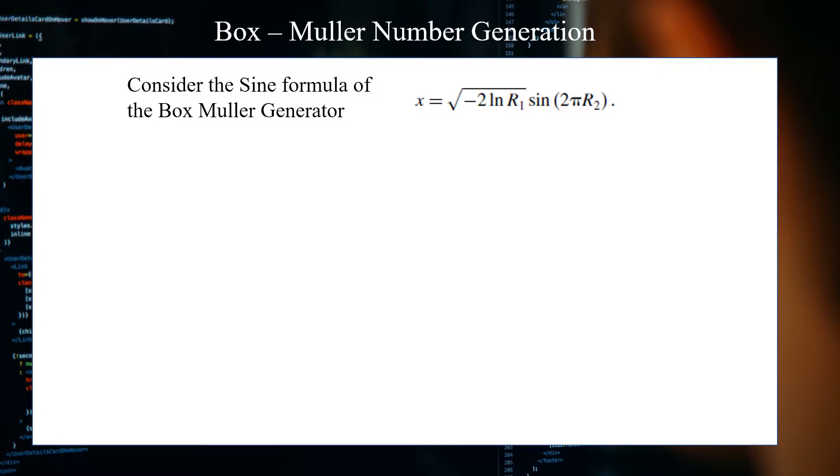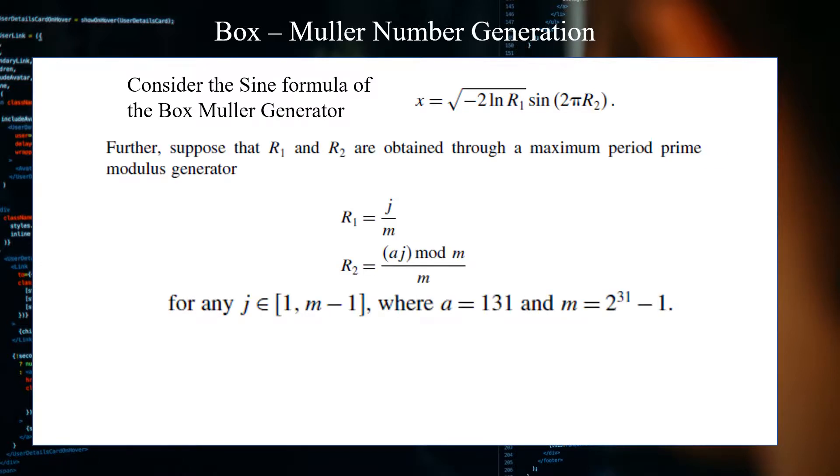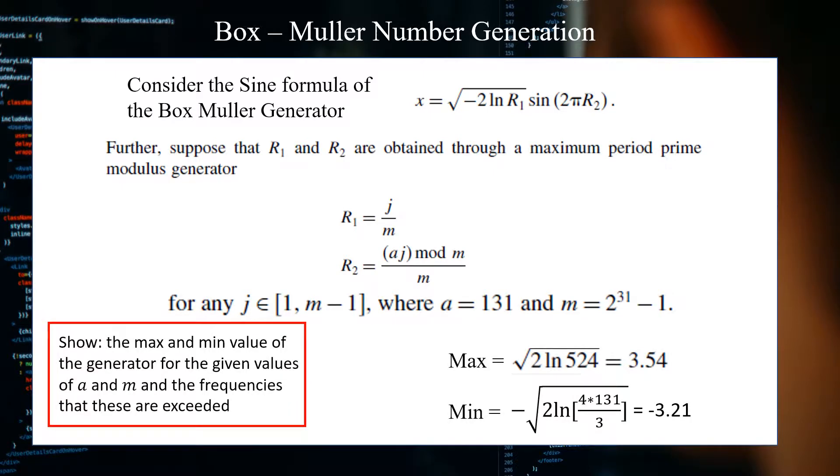Hello, this is Caleb Unger and Nick Losey in Engineering 60 Digital Simulation class, addressing homework 12 using the Box-Muller number generator. It says to only deal with the sine formula version of this generator, given that these are random numbers that we're generating.